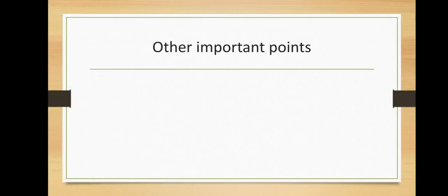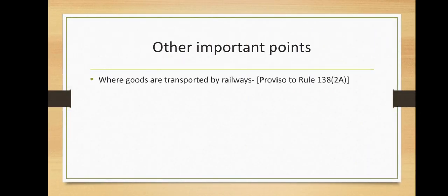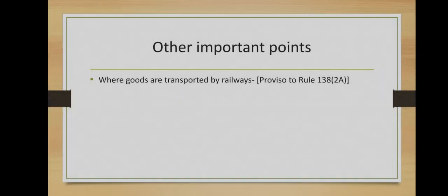The other points to be considered: where the goods are transported by railways, there is no requirement to carry the e-way bill along with the goods, but railways has to carry the invoice or delivery challan or bill of supply as the case may be along with the goods. Further, the e-way bill generated for the movement is required to be produced at the time of delivery of the goods. Further, railways shall not deliver the goods unless the e-way bill required under the rules is produced at the time of delivery, as per the Proviso to Rule 138 clause 2A.